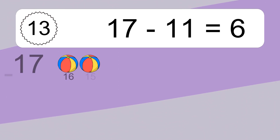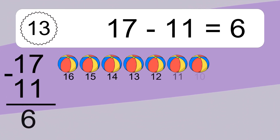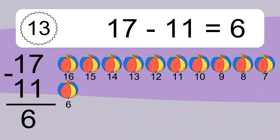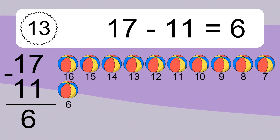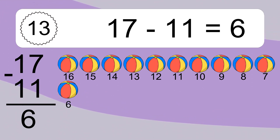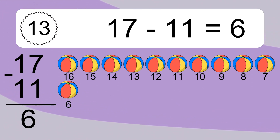17 minus 11 equals what? 17 minus 11 equals 6. Let's count it: 16, 15, 14, 13, 12, 11, 10, 9, 8, 7, 6.